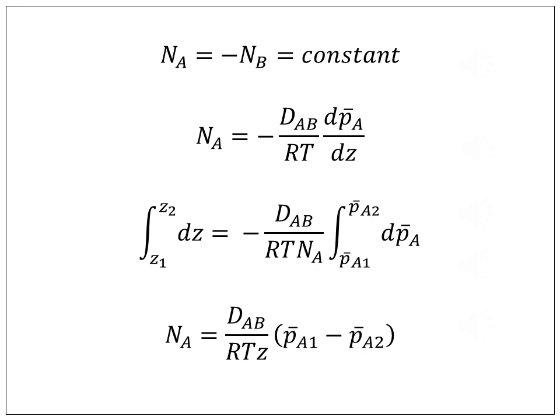This on integrating reduces to NA equals DAB by RT Z into (pA1 bar minus pA2 bar), which is an expression for the condition of steady-state equimolar counter-diffusion.